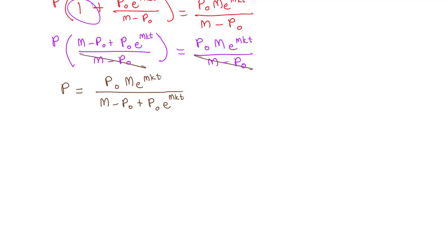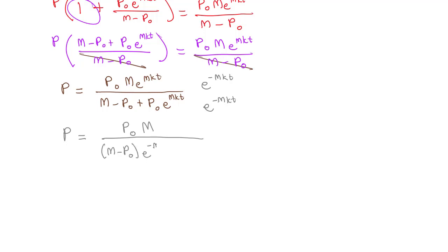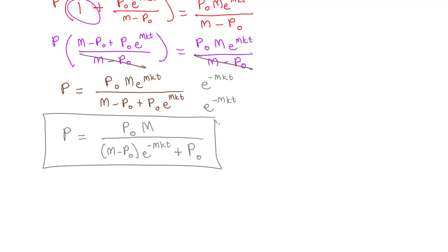We're going to clean this up just a little bit by multiplying e to the negative MKT on top and bottom to clear out that e to the MKT. When we distribute that through, we're just going to have P₀ M in the numerator, over (M minus P₀) times e to the negative MKT plus P₀ — the e's divide out — leaving behind just P₀. And we have just derived the logistic growth population formula.